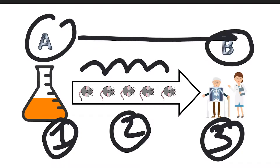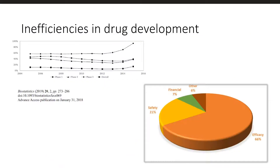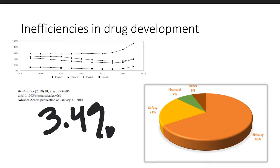At its absolute best, this process is inefficient, with only a small percentage of drugs that start out here ever making it over to the clinical setting. In fact, a recent study conducted by researchers at MIT and published in the journal Biostatistics reports an ultimate clinical trial success rate of only 3.4% in certain challenging disease markets such as oncology.